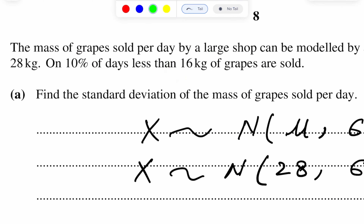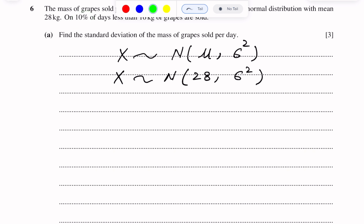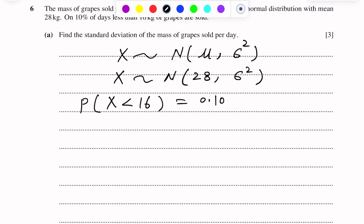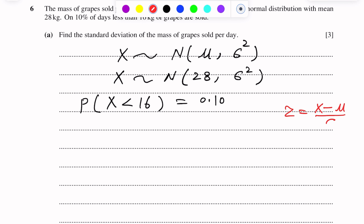It is given that 10% is the probability of less than 16 kg of grapes being sold. So we write: probability of X less than 16 equals 10%, which is 0.10. We now convert the normal variable X into the standard normal variable Z using the relation Z equals X minus mu over sigma.